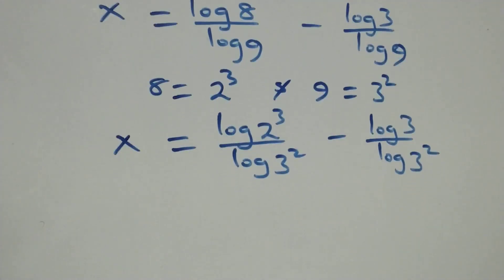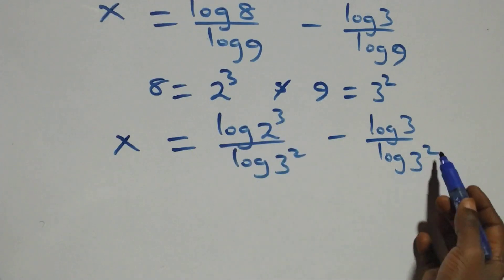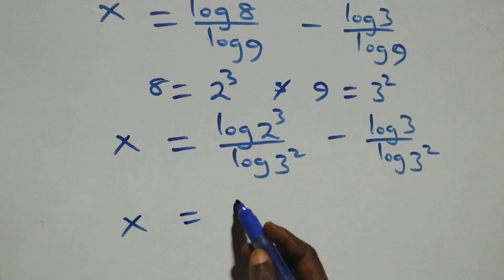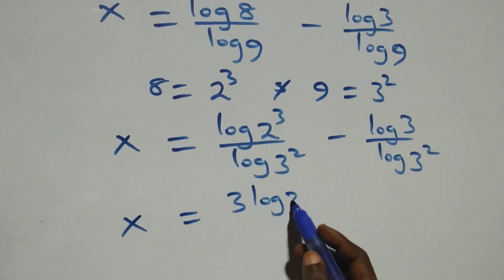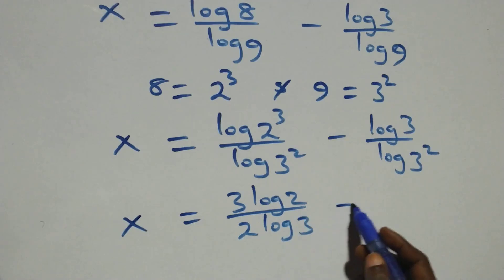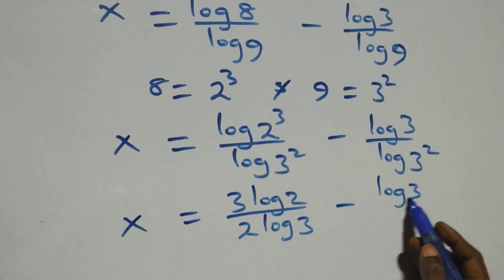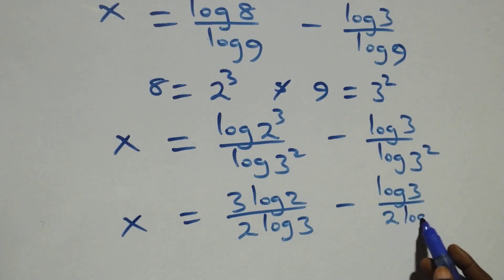We apply the log power rule: the exponents come down as coefficients. We have x equals three times log two over two times log three, minus log three over two times log three.